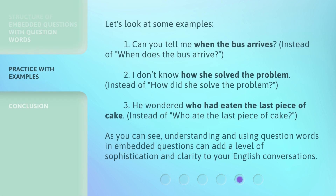Let's look at some examples. 1. 'Can you tell me when the bus arrives?' instead of 'when does the bus arrive?' 2. 'I don't know how she solved the problem,' instead of 'how did she solve the problem?' 3. 'He wondered who had eaten the last piece of cake,' instead of 'who ate the last piece of cake?' As you can see, understanding and using question words in embedded questions can add a level of sophistication and clarity to your English conversations.